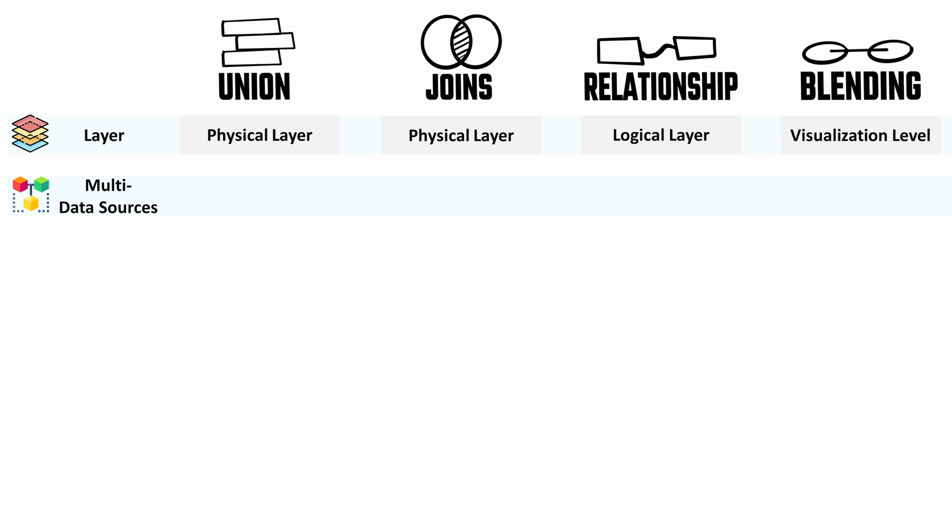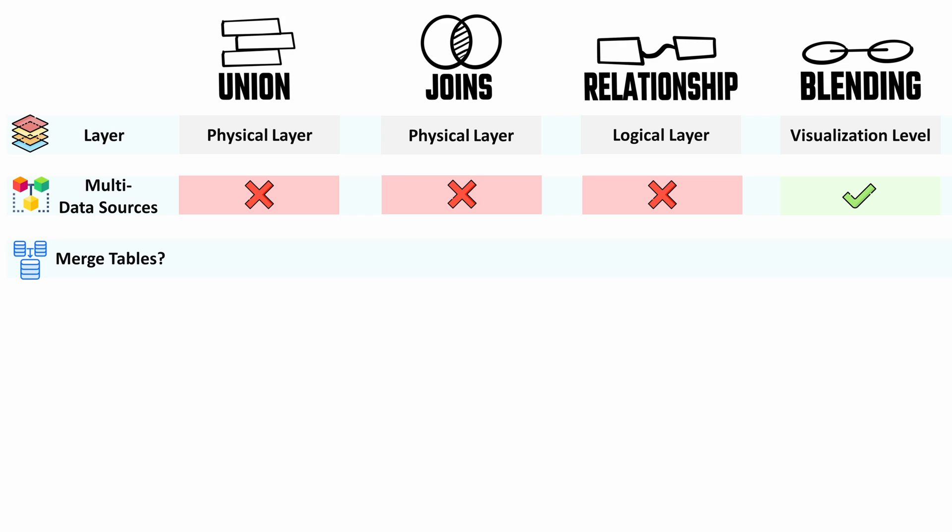The next point: can we use the method to connect tables from different data sources? For unions, joins, and relationships, we cannot — it must be done within the same data source. Only data blending can be used to connect tables from different data sources.